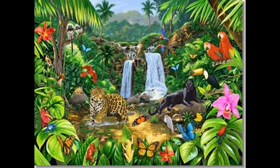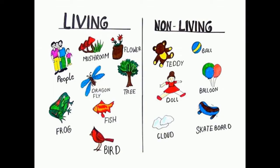Children, we can see so many things around us, and all things in this world can be broadly classified into living and non-living things. Of these things, only living things can reproduce — they can have babies or young ones of their own. We never see a car giving birth to a baby car or a table giving birth to a baby table.